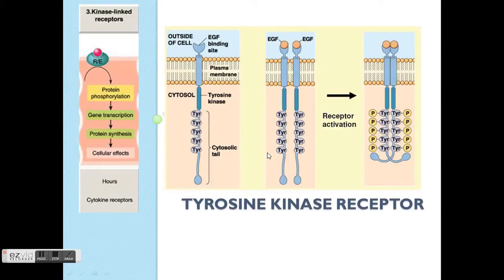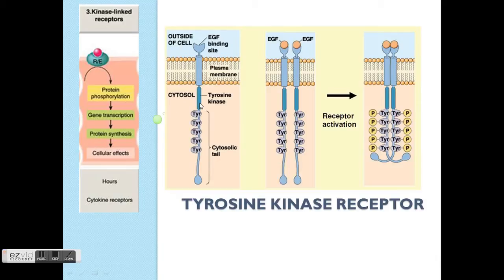This is the structure of tyrosine kinase receptors. There's a tyrosine group here at the cytosol — so this is within the cells. It is situated across the cell membrane, with a binding site for the agonist on the outside and an internal site. Unlike GPCRs which have a G protein, in this case you have loads of tyrosine groups — a long tyrosine tail.